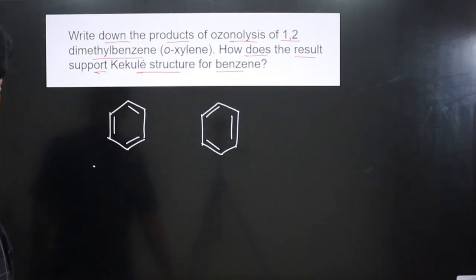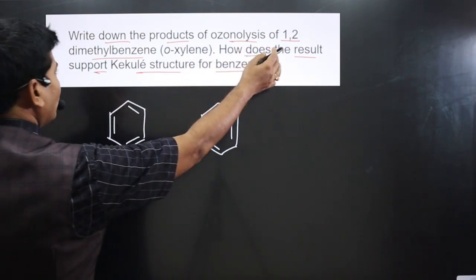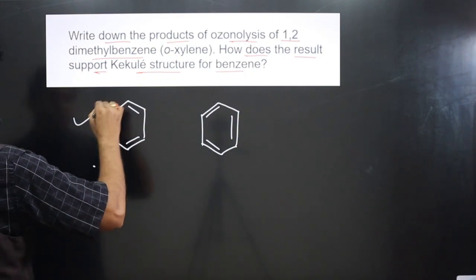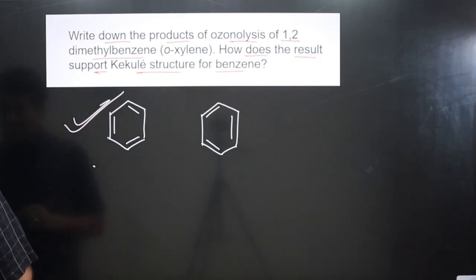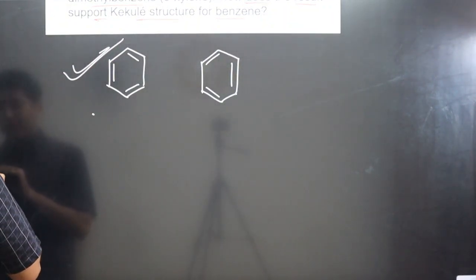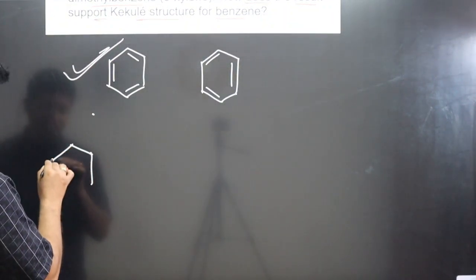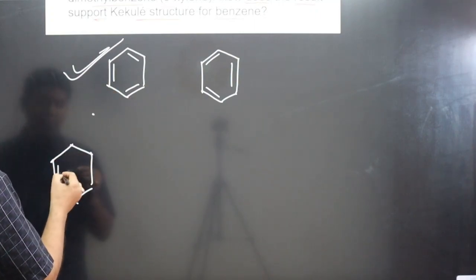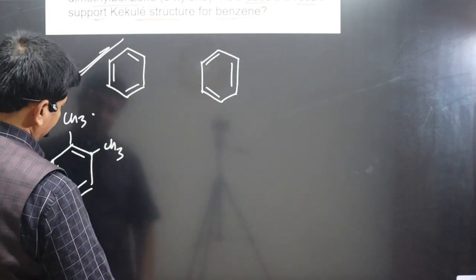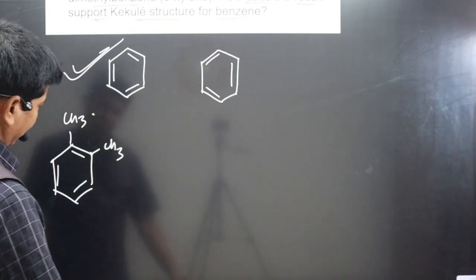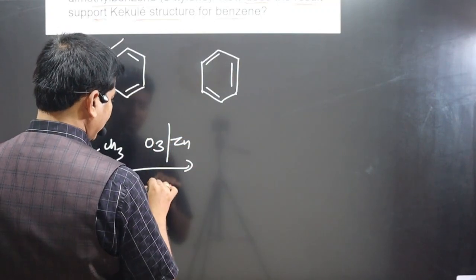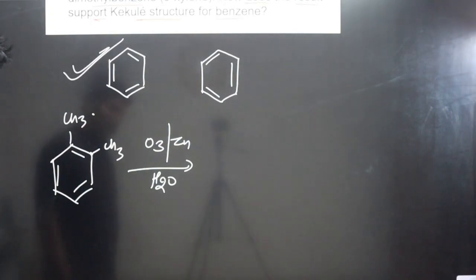Let's work through this one by one. For 1,2-dimethylbenzene, taking the first Kekulé structure of benzene, the two CH₃ groups are attached consecutively. We have a double bond–single bond arrangement at those positions. We carry out reductive ozonolysis — only one-step oxidation is carried out.